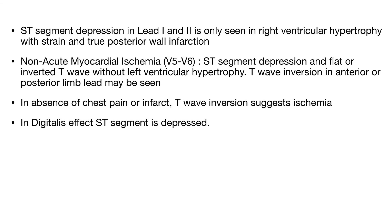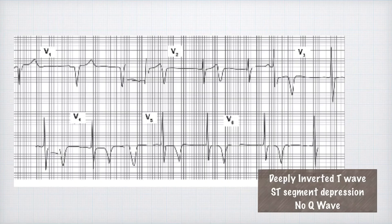For non-acute myocardial ischemia: if leads V5 and V6 show ST segment depression and flat or inverted T waves in a patient without left ventricular hypertrophy, myocardial ischemia is suspected. T wave inversion in anterior or posterior limb leads, in the absence of chest pain or infarct, also suggests myocardial ischemia. In summary, non-acute myocardial ischemia may be diagnosed from ST depression in V5 and V6 with flattening or inversion of T waves, and T wave inversions in limb leads. Side note: if the ST segment is depressed in a curve, this is due to digitalis effect from digoxin medication, not subendocardial ischemia.